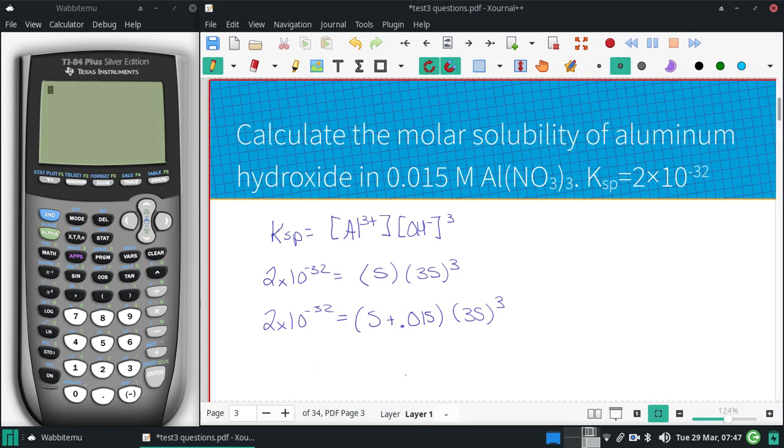First thing I'm going to try to do is solve this using assumptions. And I'm going to assume the S is very small. And that's probably a safe bet. With how small this Ksp is, this stuff doesn't dissolve very well at all. So what we're going to do on that assumption, we're going to assume that this is basically going to stay as 0.015.